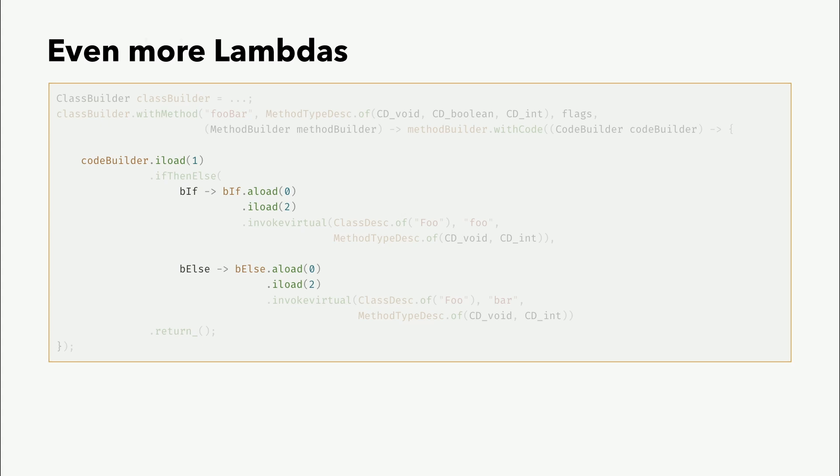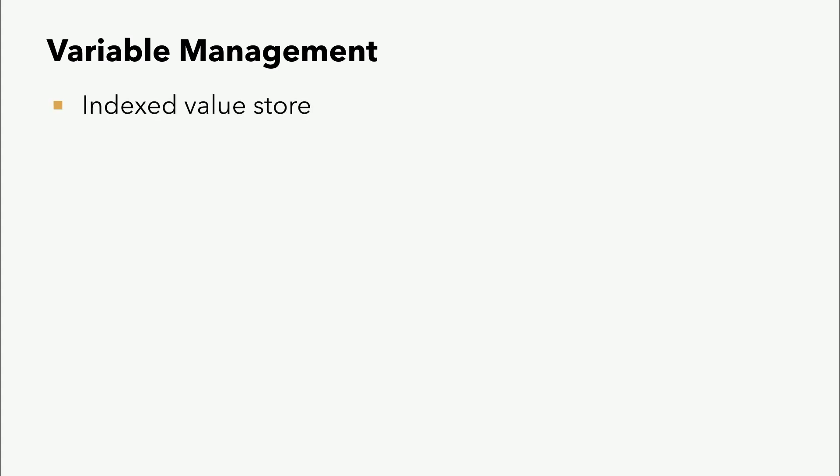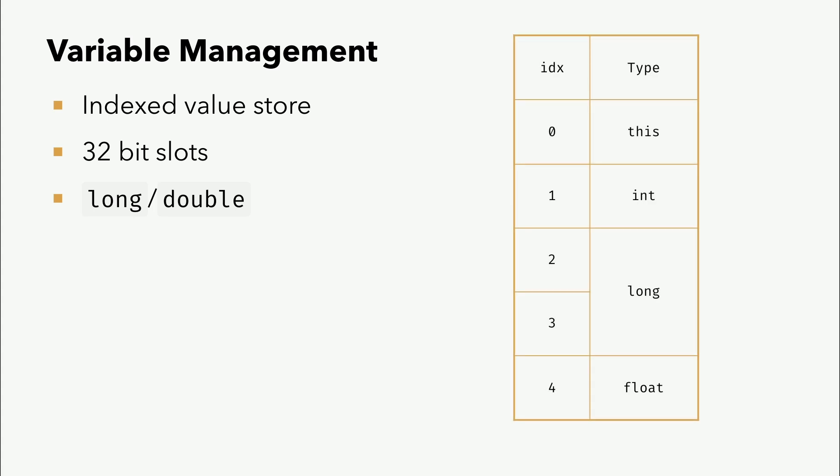Wir haben hier aber immer noch ein bisschen Magic: die 1, die 0, die 2. Wie ich vorhin gesagt habe, die 0 ist this, 1 ist der erste Parameter, 2 ist der zweite Parameter. Das Problem ist, wie Variablen von Bytecode oder von der JVM gemanagt werden. Es ist ein Index-Value-Store. Bei dem ist 0 immer this, der Empfänger, und die Slots sind 32 Bits groß für die Argumente. Long und Double sind nicht 32 Bit groß, sondern 64. Das bedeutet, wenn wir eine Methode haben, die ein Integer und ein Long und ein Float entgegennehmen, ist der dritte Parameter nicht Index 3, sondern Index 4. Das ist natürlich super in Kombination damit, dass wir unsere Methode mit Strings beschreiben.